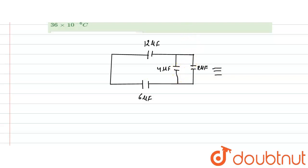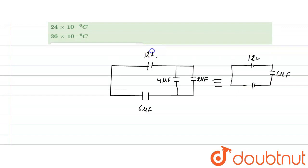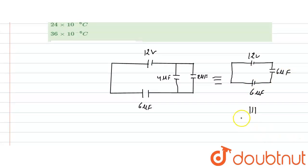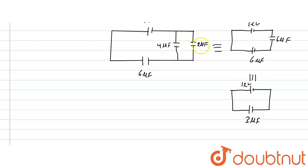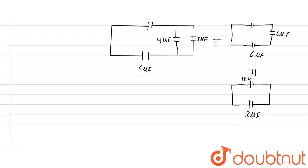Now we find the equivalent of this diagram. The 4 microfarad and 2 microfarad capacitors are connected in parallel, so we combine them. They are then in series with the 6 microfarad capacitor. The equivalent of the parallel combination gives 6 microfarad, and the overall series equivalent comes to 3 microfarad.